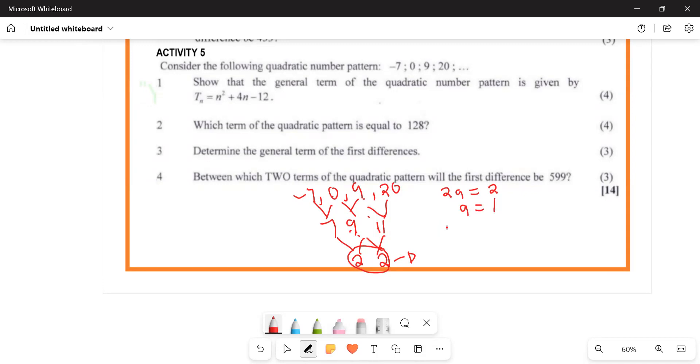To find b, we use 3a + b = 11 (the third first difference). Substituting a = 1, we get 3(1) + b = 11, so 3 + b = 11. Transposing, b = 11 - 7, no wait, 11 - 3 = 4. So b = 4.